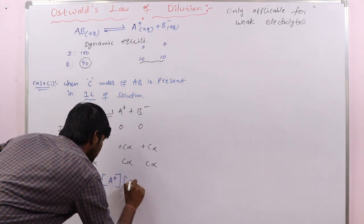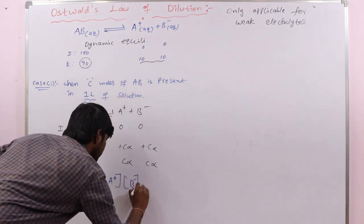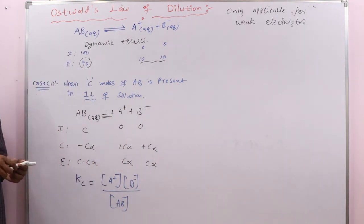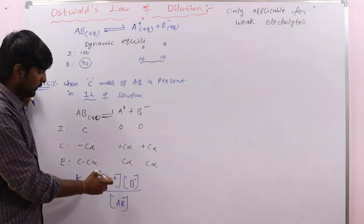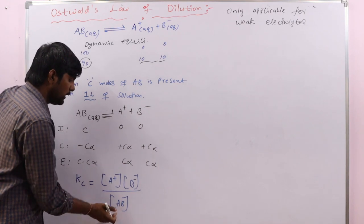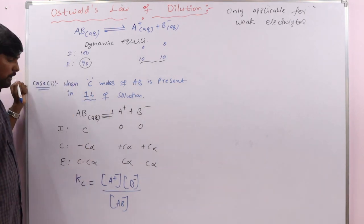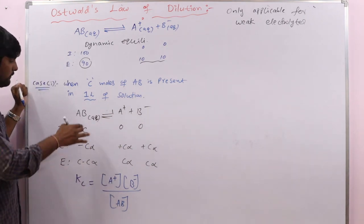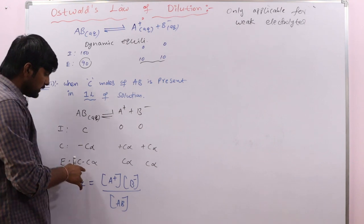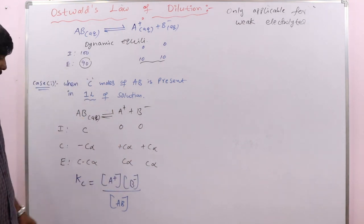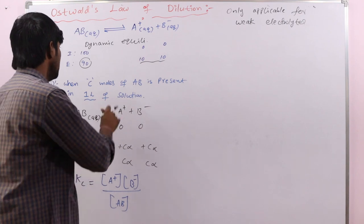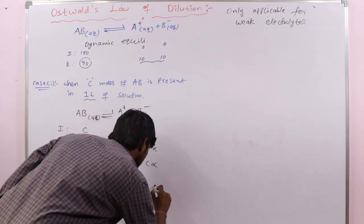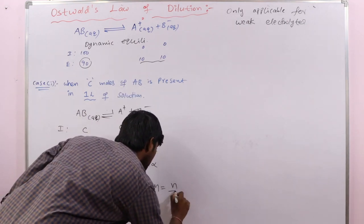Kc equals concentration of A⁺ times concentration of B⁻ divided by concentration of AB. We have two products and one reactant. These values are number of moles, not concentrations, but since C moles are present in one liter, molarity equals the number of moles here — so concentration is expressed in terms of molarity.